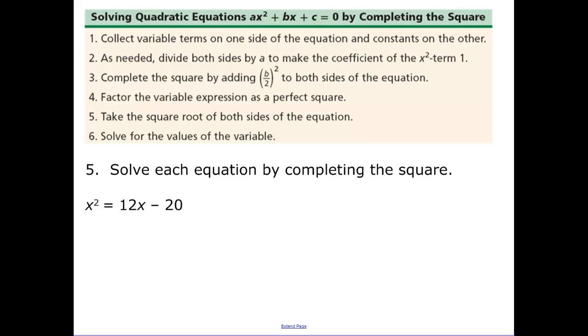Okay quadratic equations by completing the square and yes I want these steps in your notes. Collect all variable terms on one side of the equation and constants on the other. So for example 5, what I'm going to do is I'm going to subtract the 12x over, I'm going to leave some space, and the other side is 20. As needed divide both sides by a. We need the x² coefficient to be 1. The x² coefficient is 1 in this case so we don't need to worry about step 2.